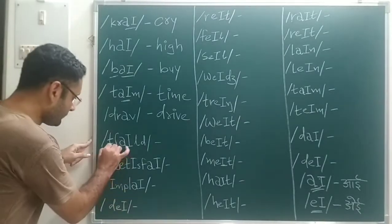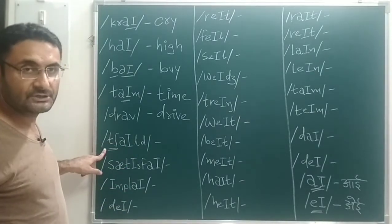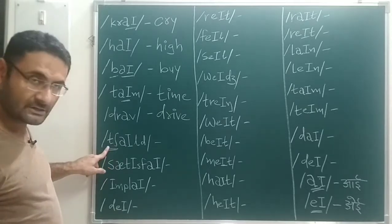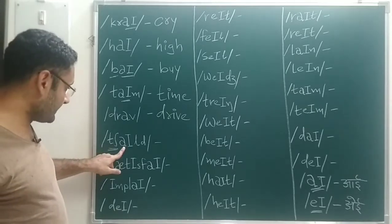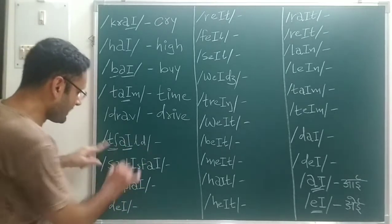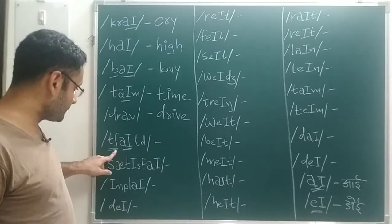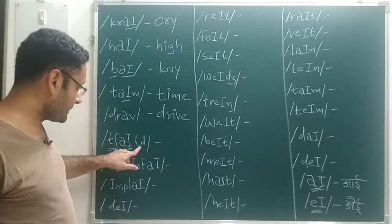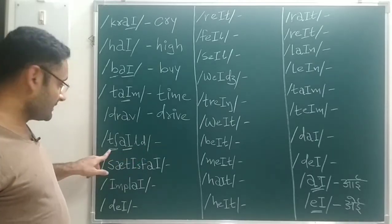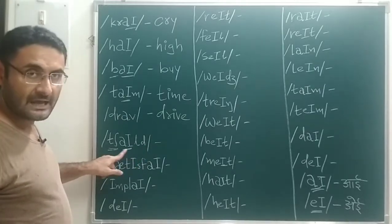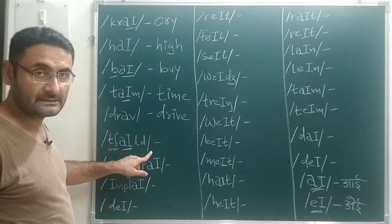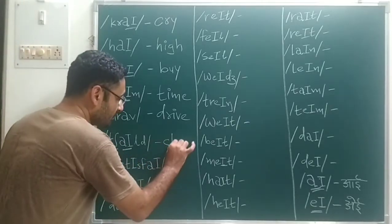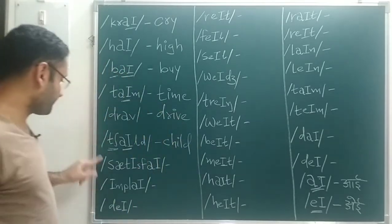Next: T sound, then I sound, L sound, D sound — T, I, L, D — that is 'child'. So I will write: child.